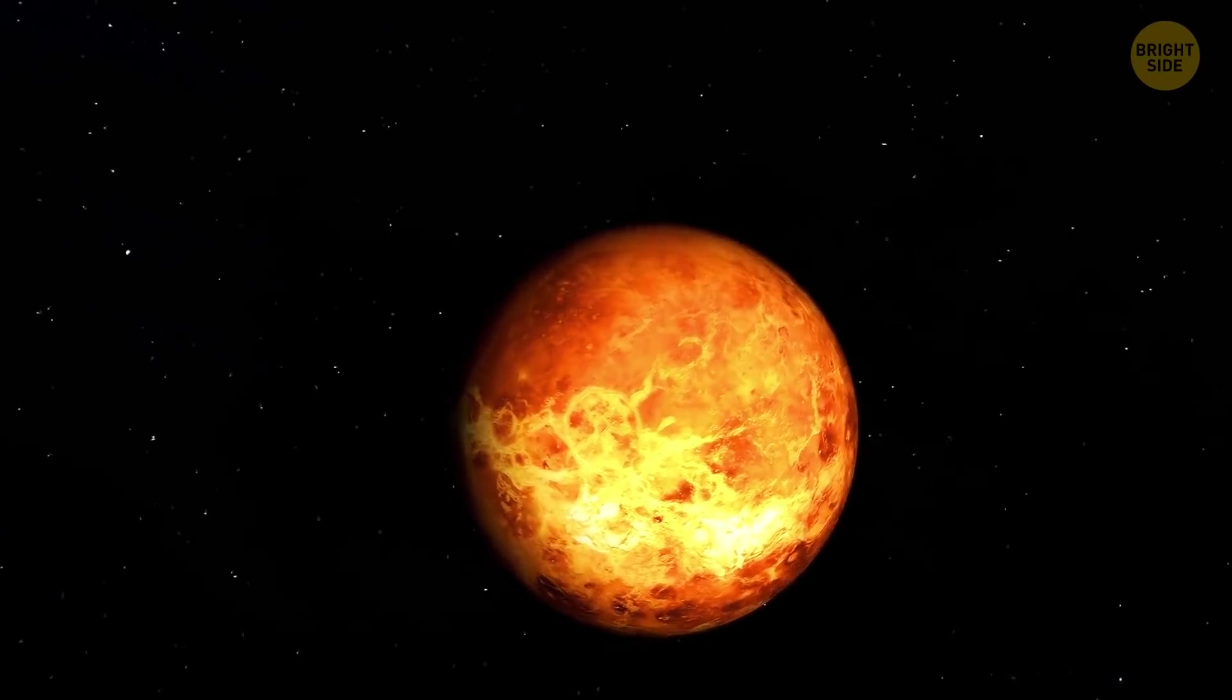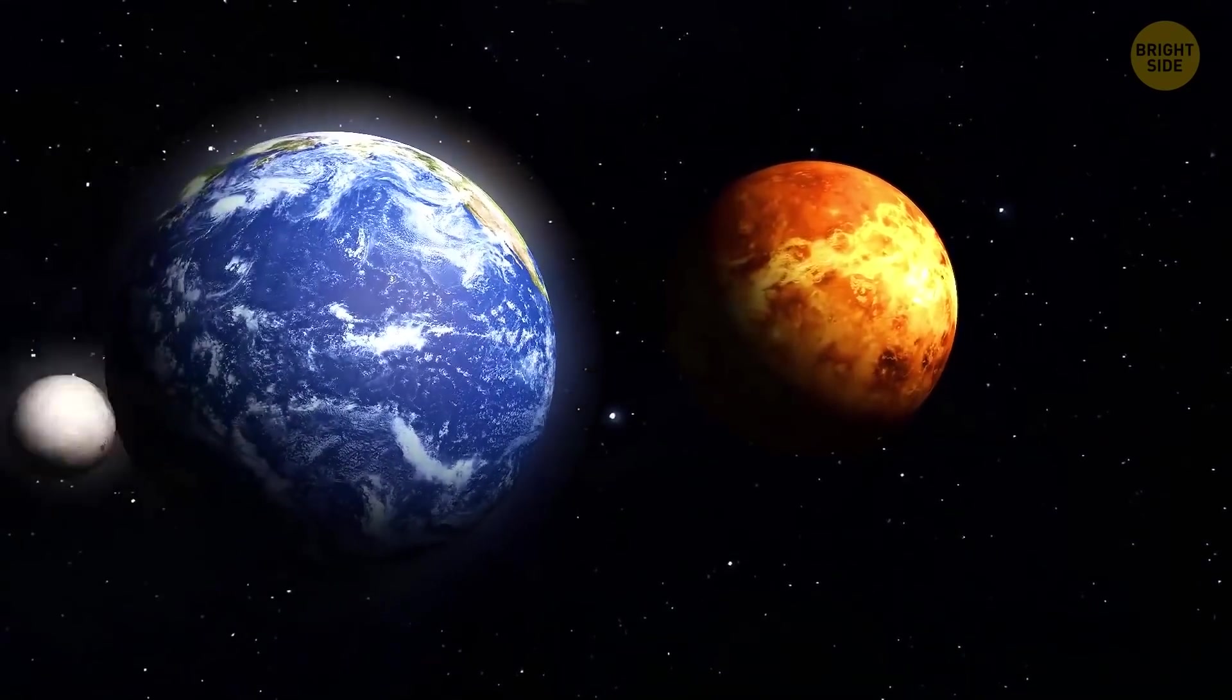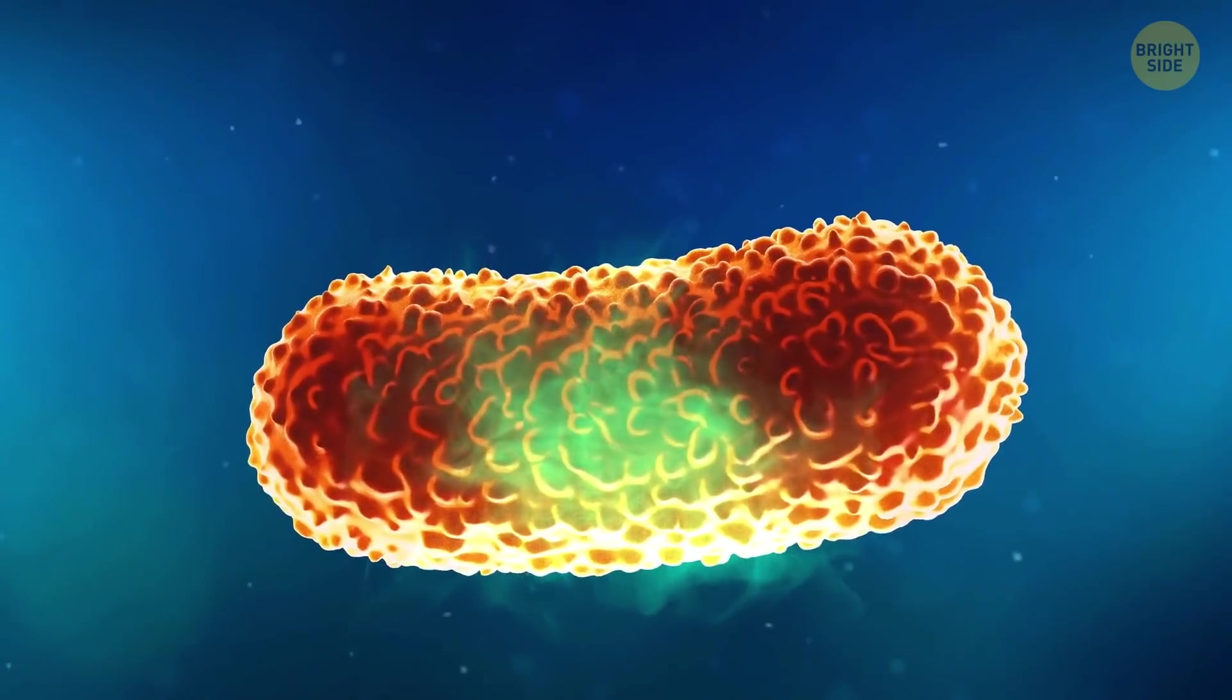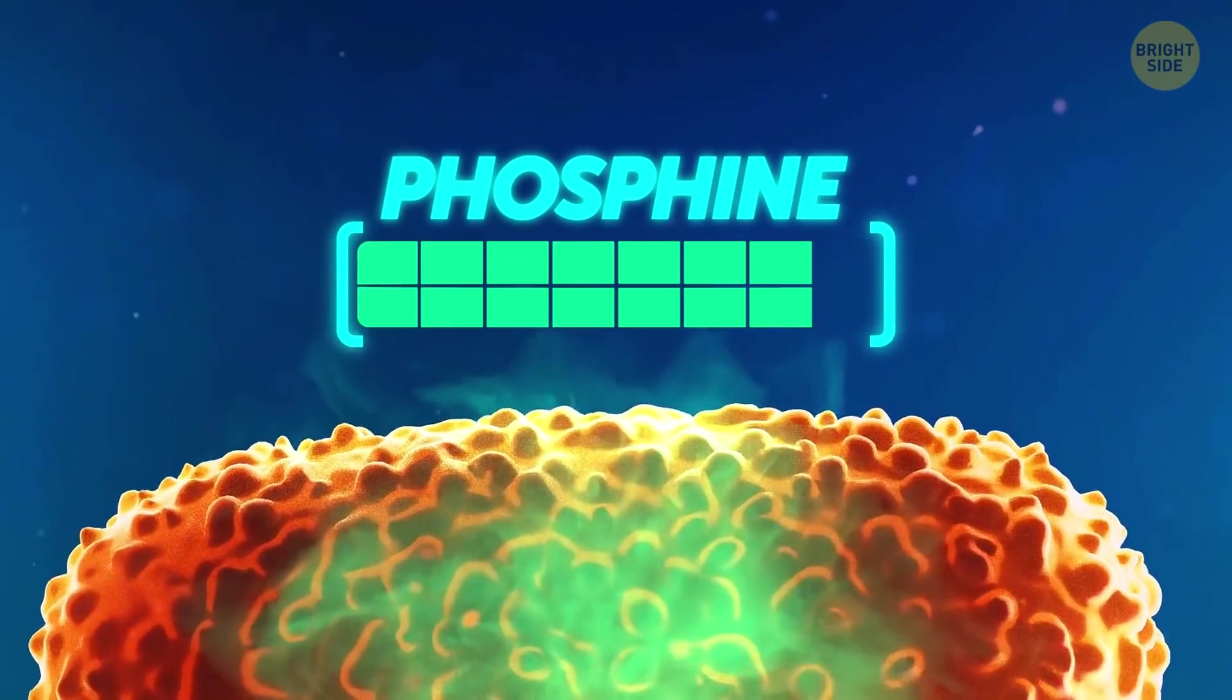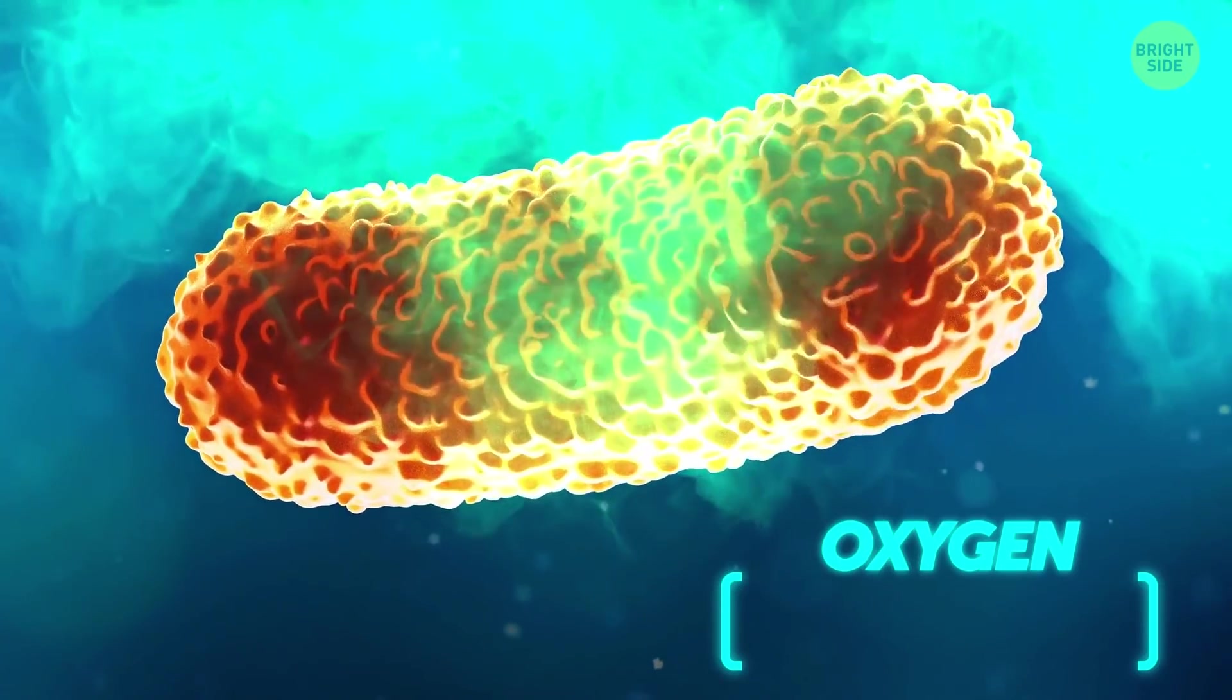This discovery came as a huge surprise because Venus was believed to be too hostile for any forms of life. Now, though, it might become the first ever planet, apart from Earth, to be home to living creatures. The microbes that produce phosphine probably live in the acidic clouds, and they don't need oxygen to survive.